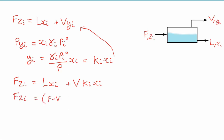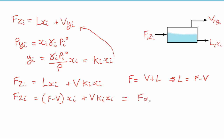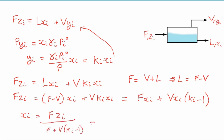We can rearrange this using the fact that a total mass balance on the system tells us the feed equals the vapor phase plus the liquid, so the liquid equals the feed minus the vapor. We can rearrange for our liquid composition xi, and also write this in a convenient form in terms of the ratio of the vapor to the feed.